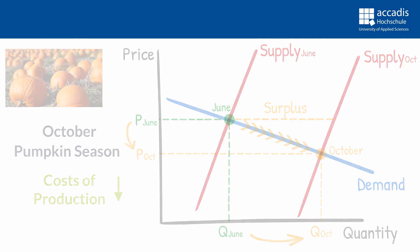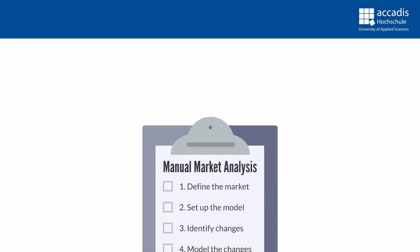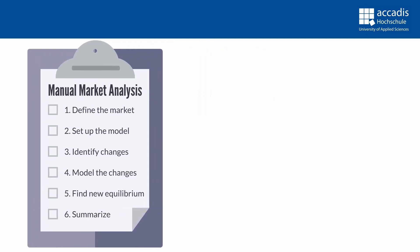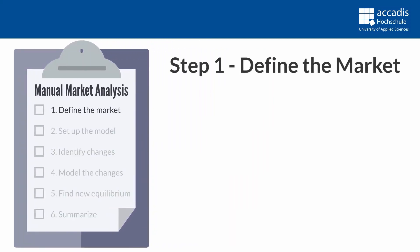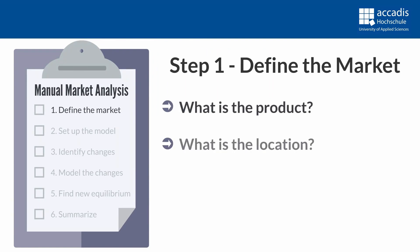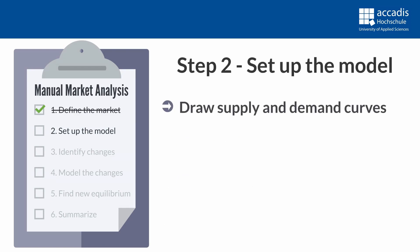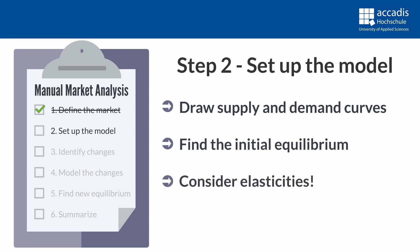As you might have noticed, we follow a stepwise procedure with our market mechanism analysis. Here's a manual for that type of analysis. Step 1: Define the market. Which market are we talking about? What is the product? What's the location? Be as specific as possible. Step 2: Set up the model. Draw the respective demand and supply curves and identify the initial equilibrium. Consider elasticities too - do you think demand or supply have an especially high or low elasticity? If yes, draw the curves accordingly.